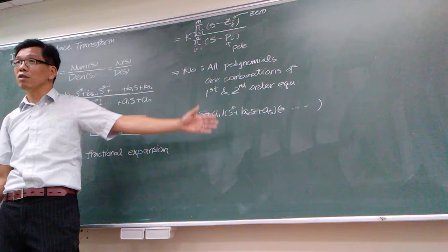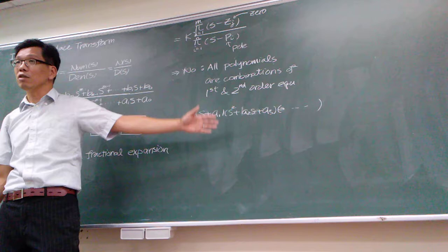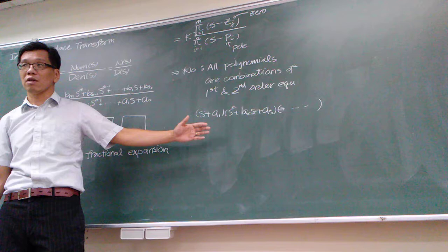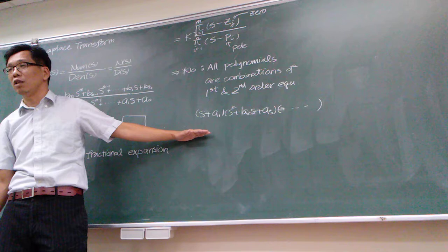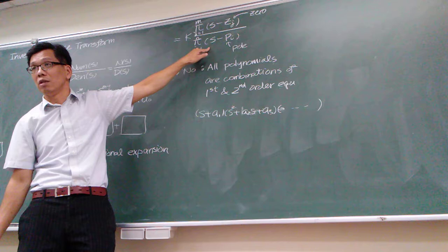We're going to talk about when we have multiple first-order and second-order systems — physically, how can we decouple them? But mathematically, you just need to remember all the equations must be first-order and second-order. Same for your numerator. It must be first-order and second-order systems.